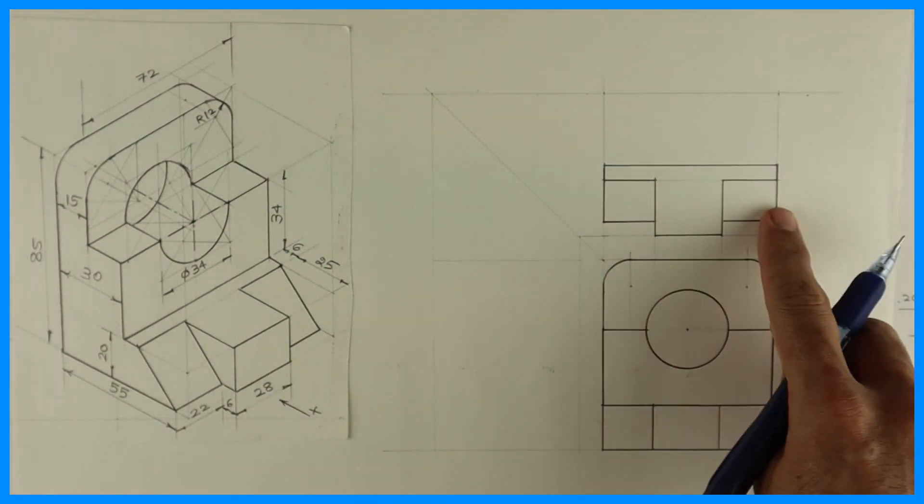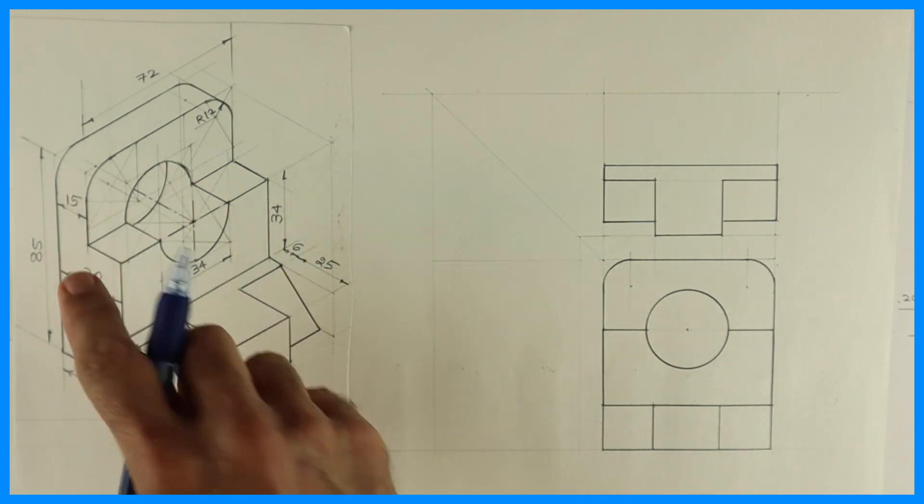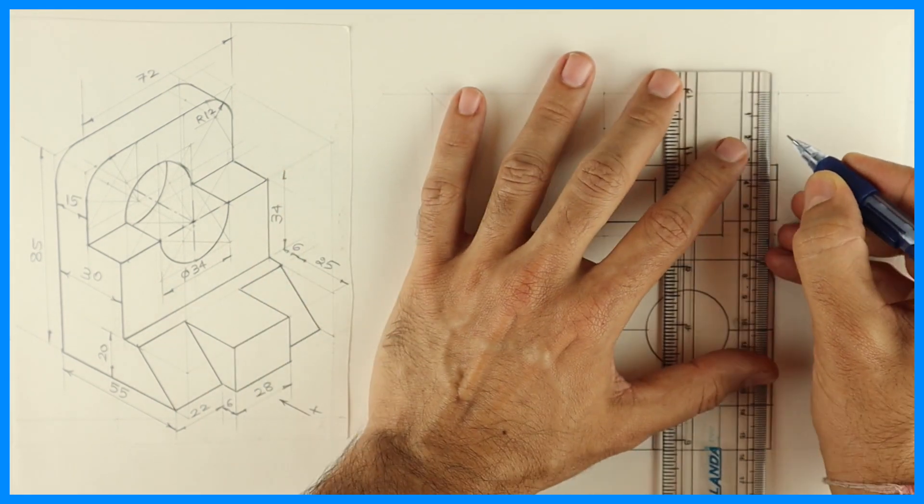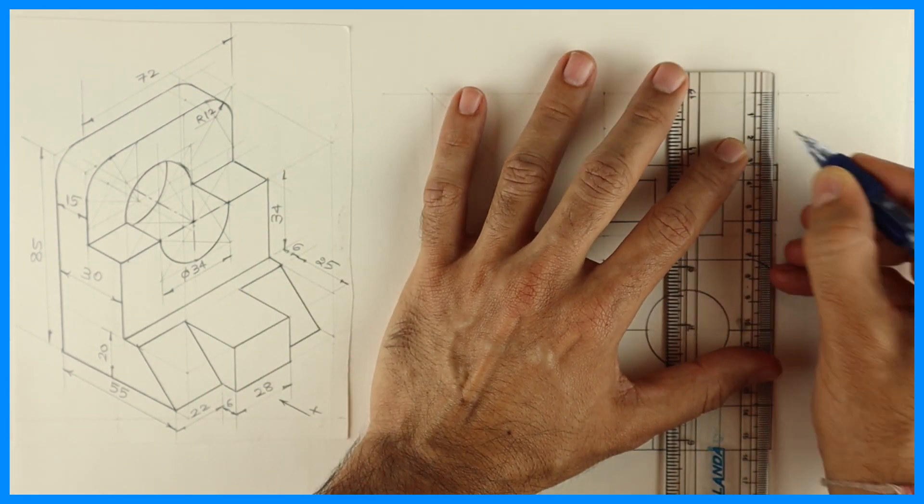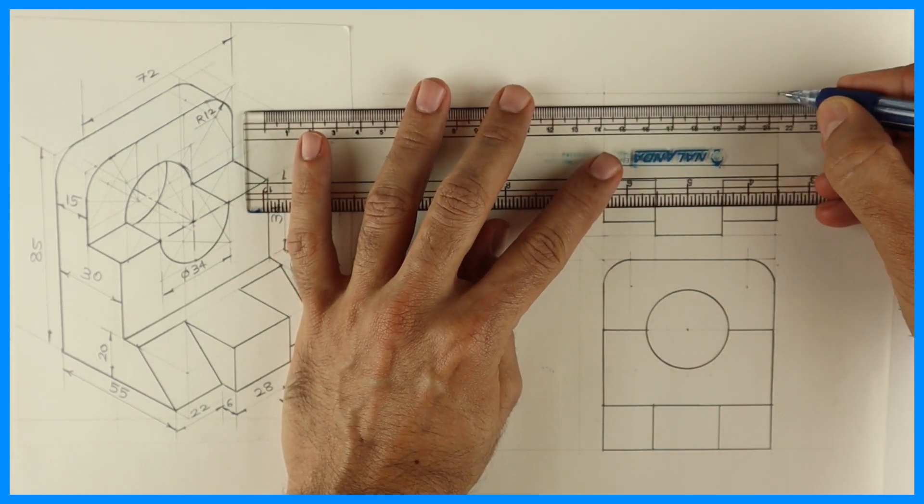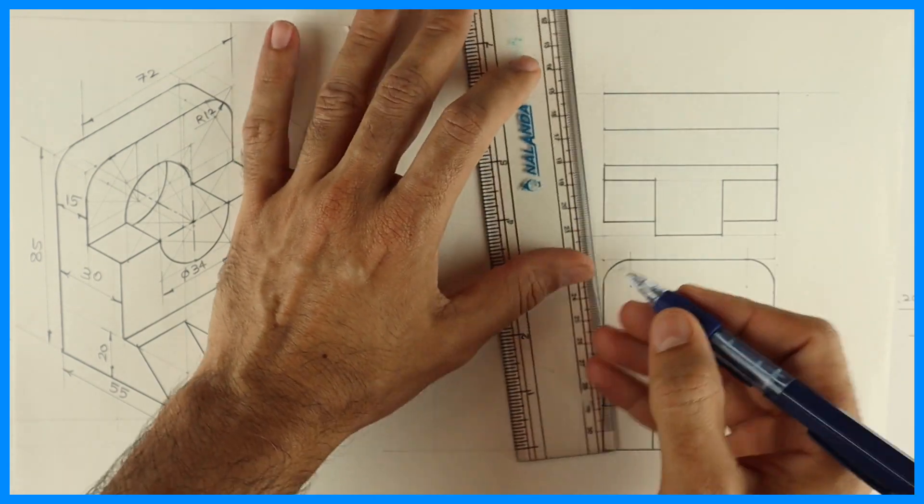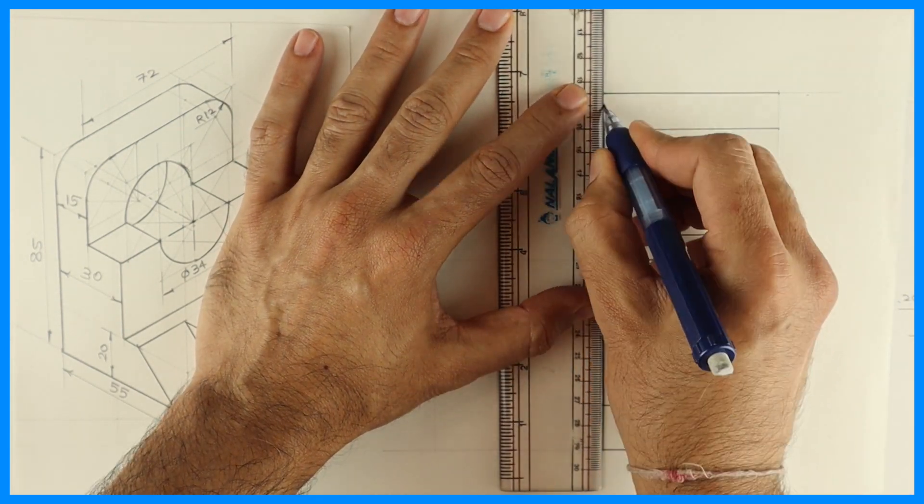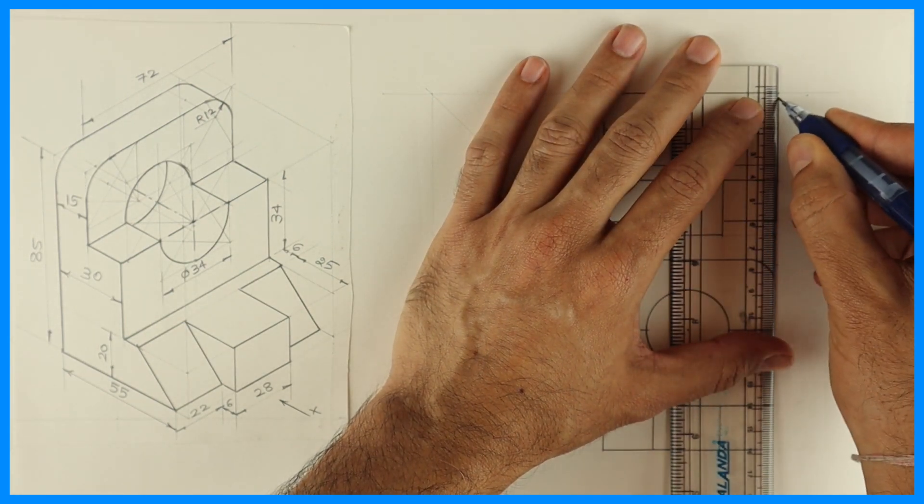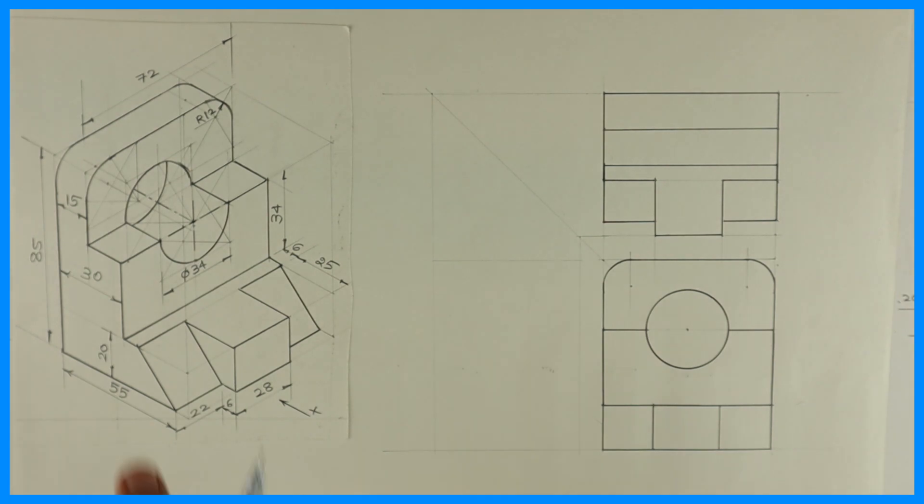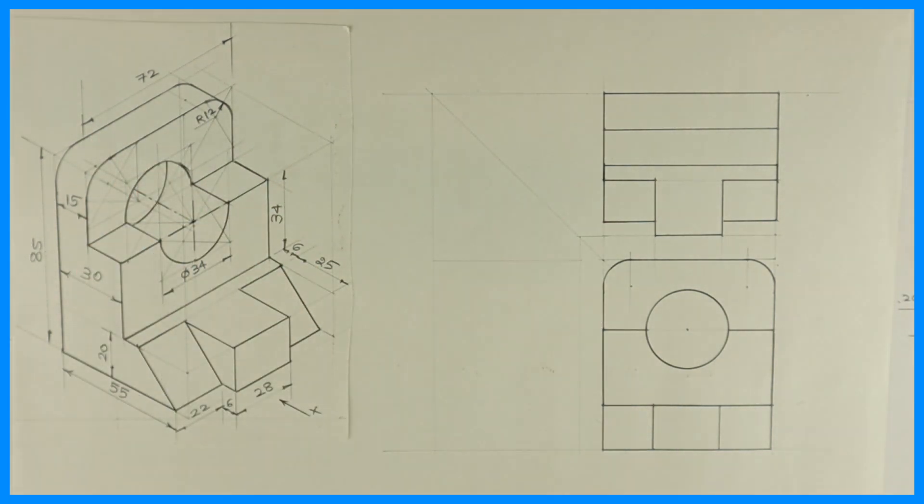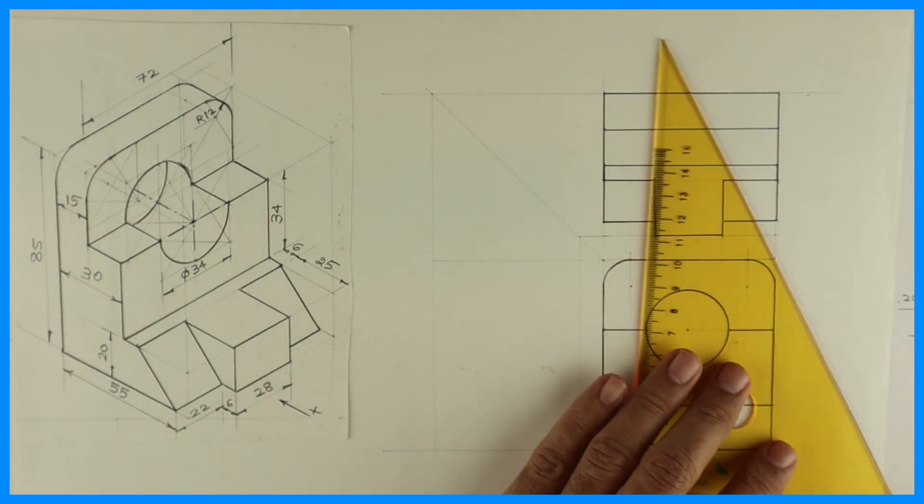So we are done with these two portions, right, and T also. Now we'll draw these two. This is 30, so that is already there. We'll mark 15. See, after that, this part, this circle, right? So this line is dark till here, then it is dotted.